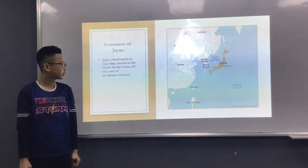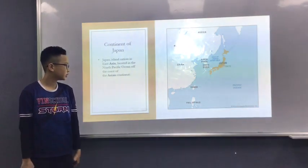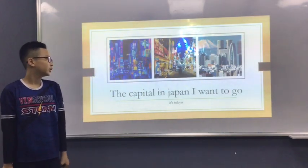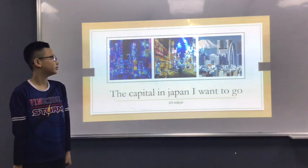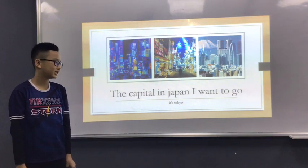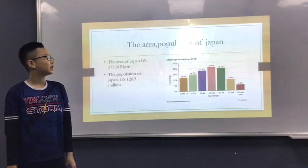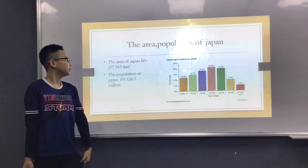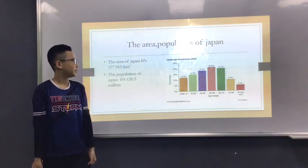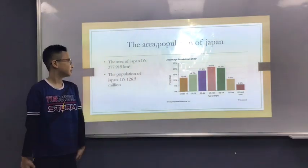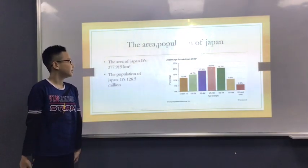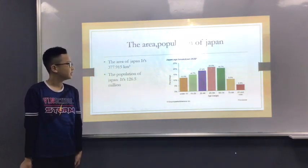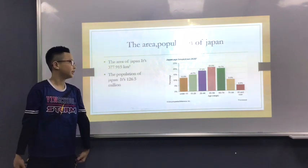In the north of the ocean of the Asia Ocean. So how do we go to the Japan area to the world? The area of Japan is 27,950 kilometers.